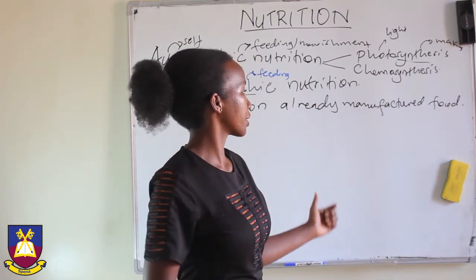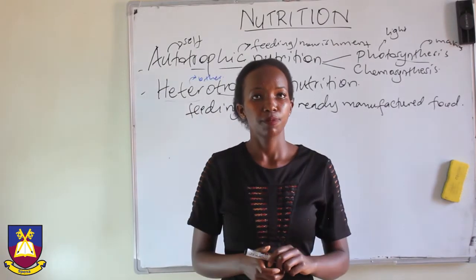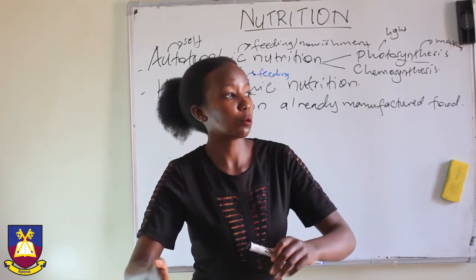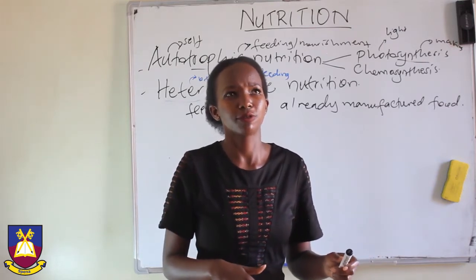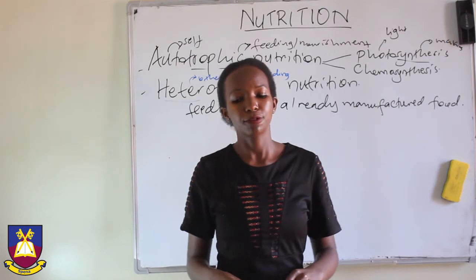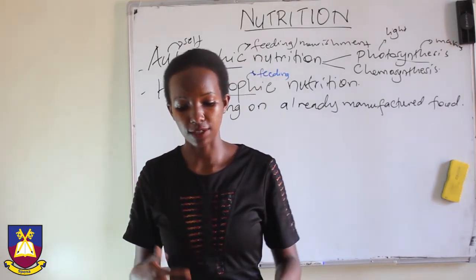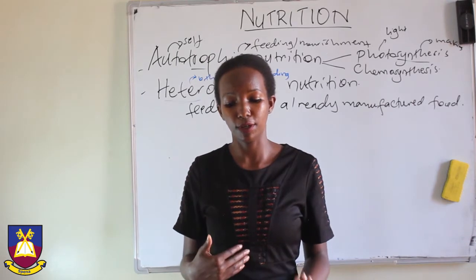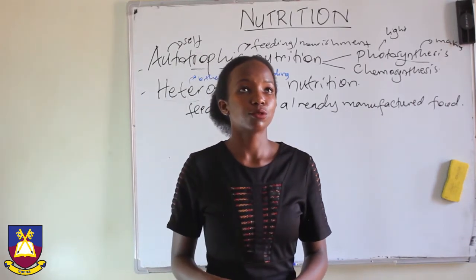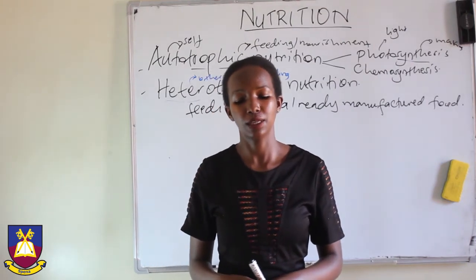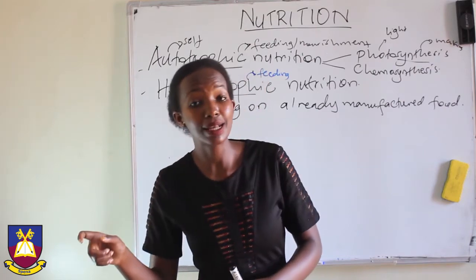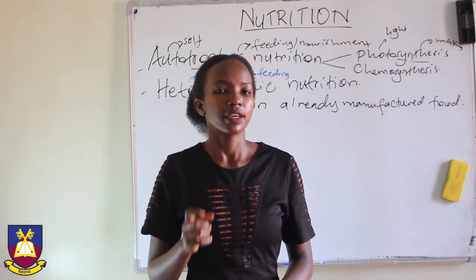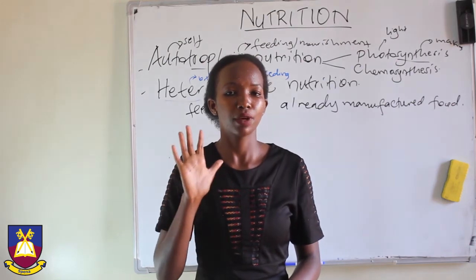These organisms depend on already manufactured food compounds. In one way or another, we all depend on those that can make their own food, which we also refer to as producers. Autotrophic organisms can also be referred to as producers. Heterotrophs are incapable of making their own food, so they depend on food that has already been made. Examples include animals, insects, insectivorous plants, and most bacteria.